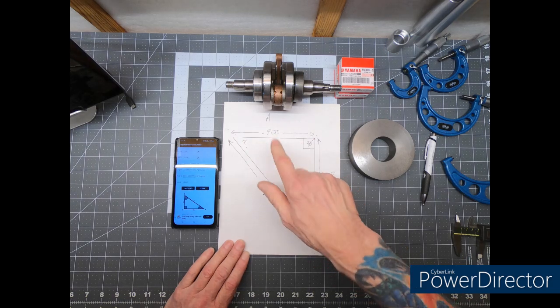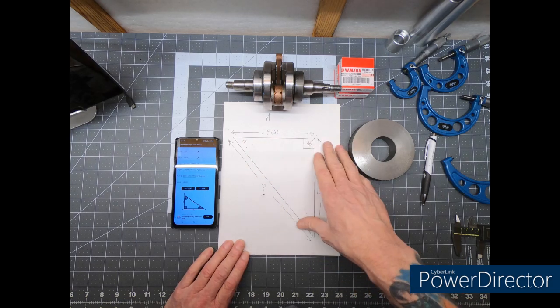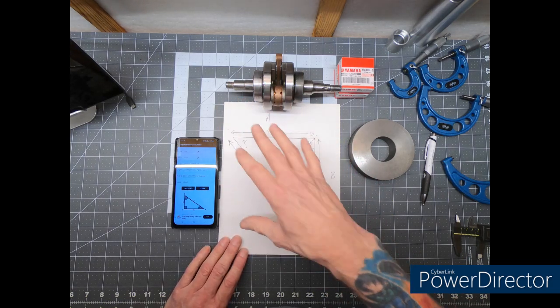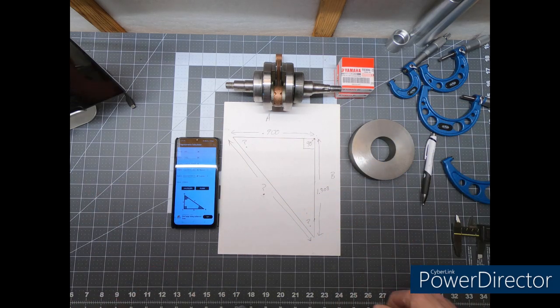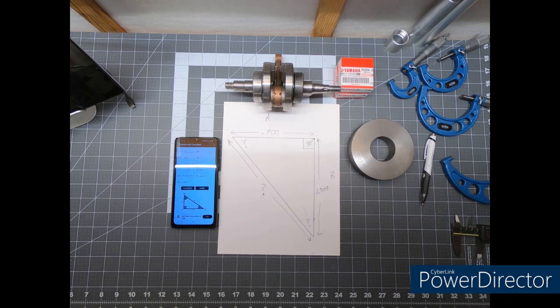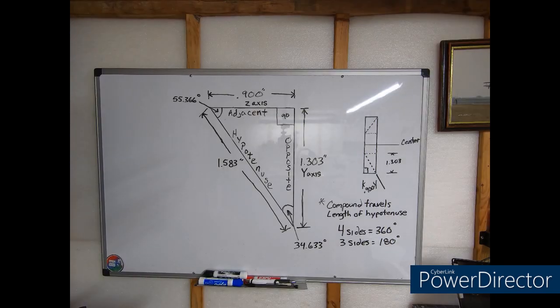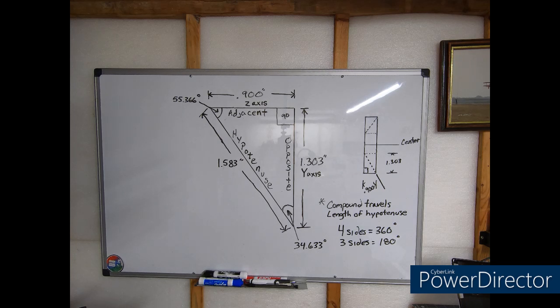We'll move to the whiteboard and I'll give you a little bit more detail and explanation of this. Then we'll move to the lathe and set the indicator up, set our compound up, and prove our angle is set perfect. All right, let's take a look at the whiteboard.